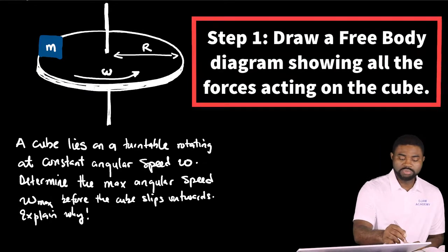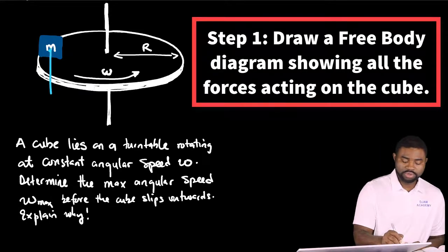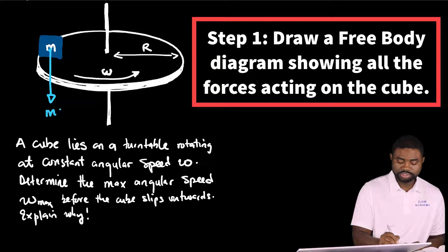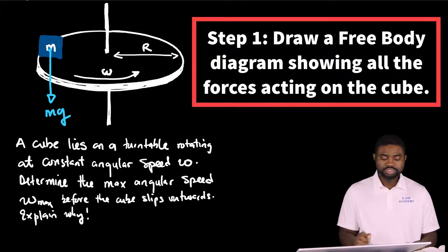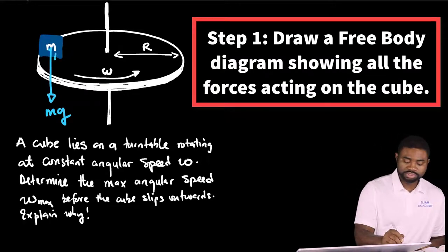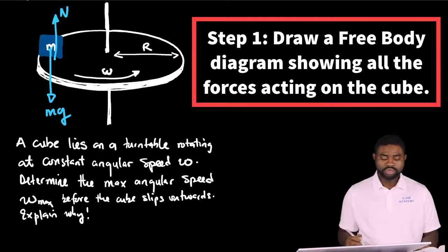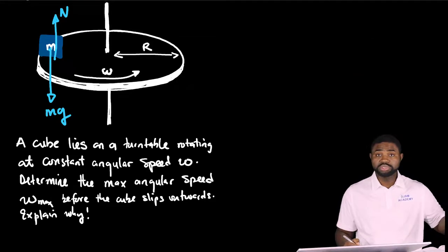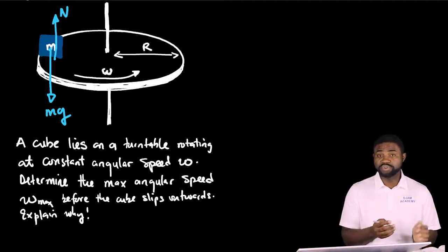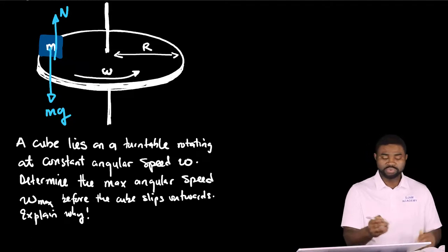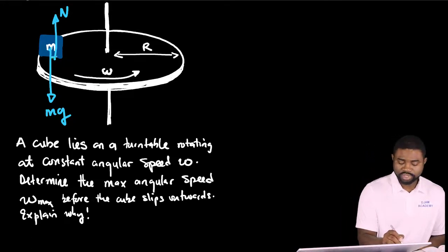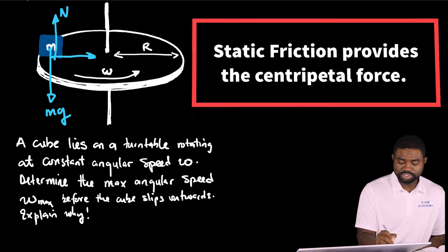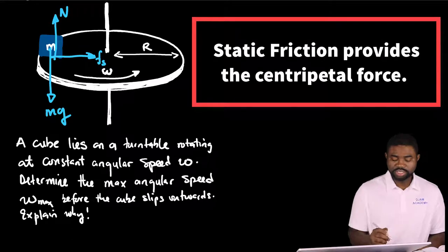So the weight of the block is vertically downwards. There is a normal force acting upwards and the block has a tendency to slide to skid outwards. That means that there is a force preventing it from sliding outwards. Therefore that force must be acting inwards. And so we have here a static friction force acting inwards.